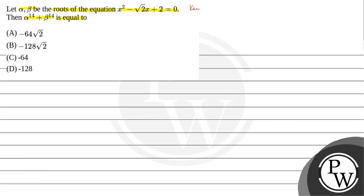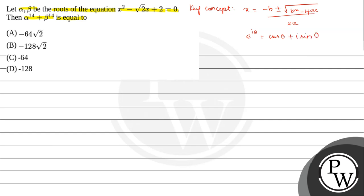Here the key concept is that to find the root of a quadratic equation, the formula is x equals to minus b plus or minus root of b squared minus 4ac divided by 2a. Another key concept is e power i theta equals to cos theta plus i sine theta, and e power minus i theta equals to cos theta minus i sine theta.